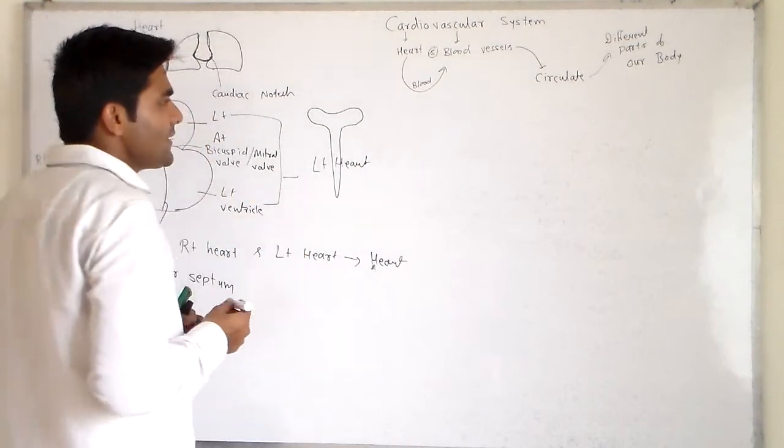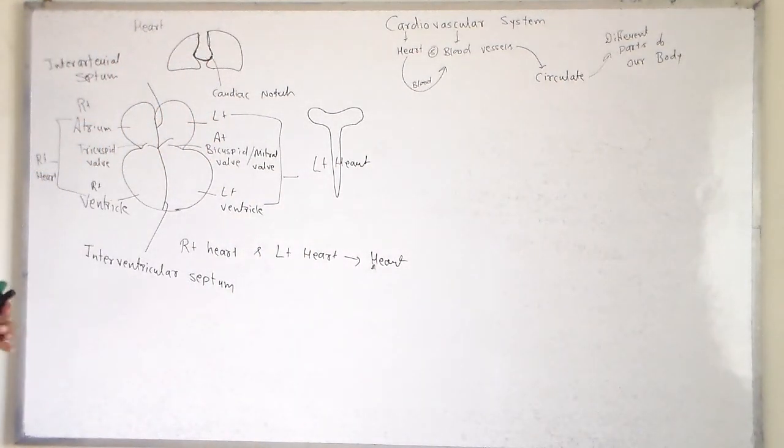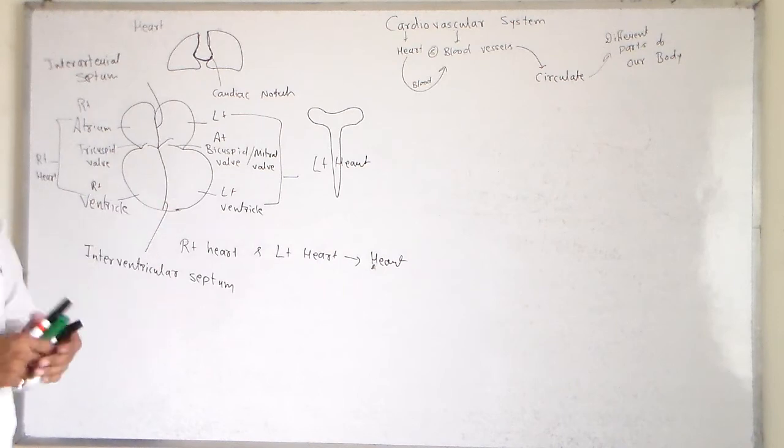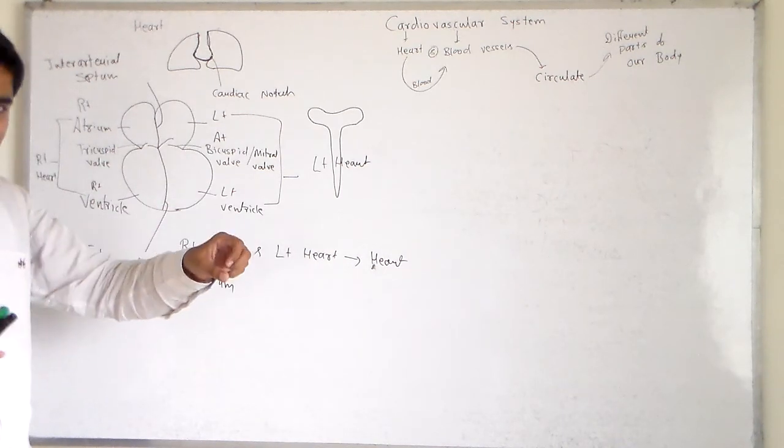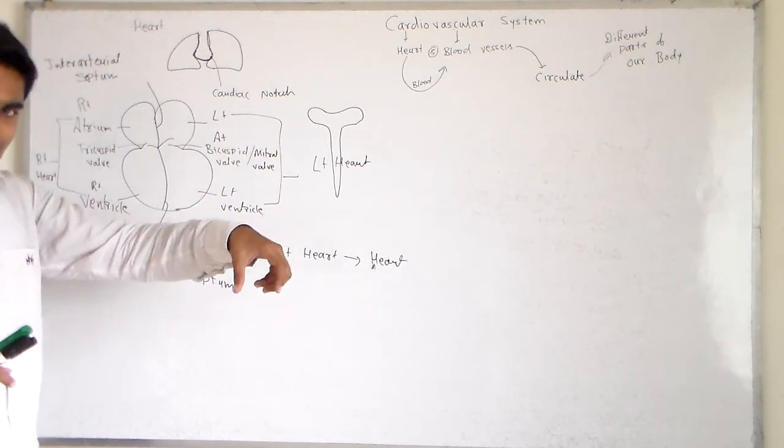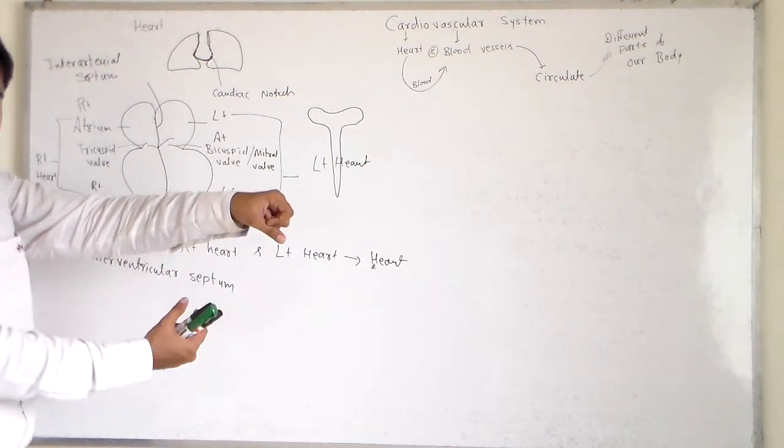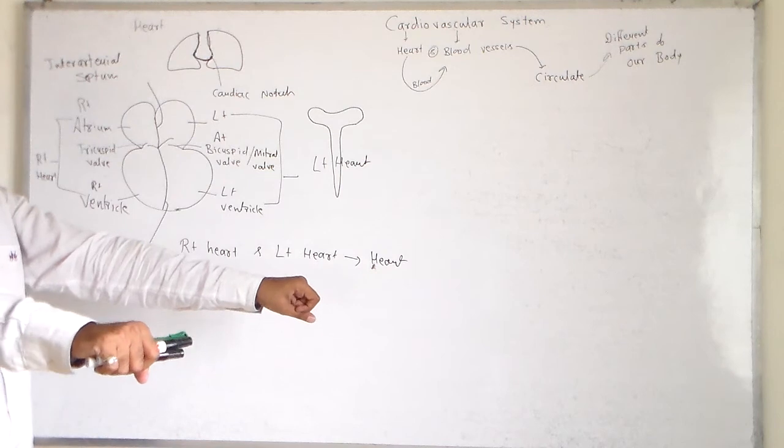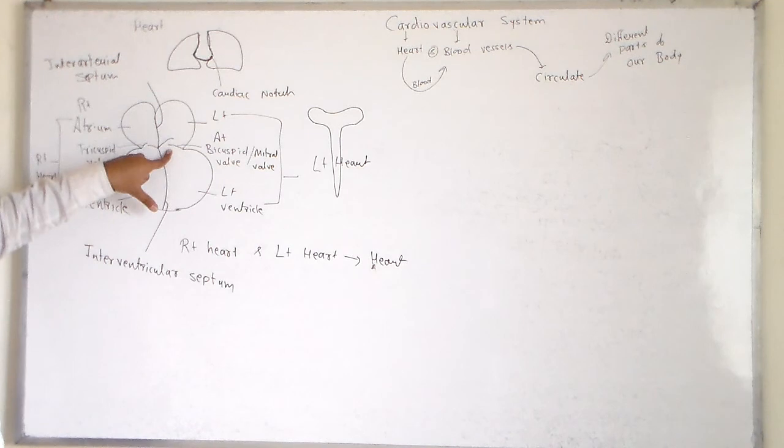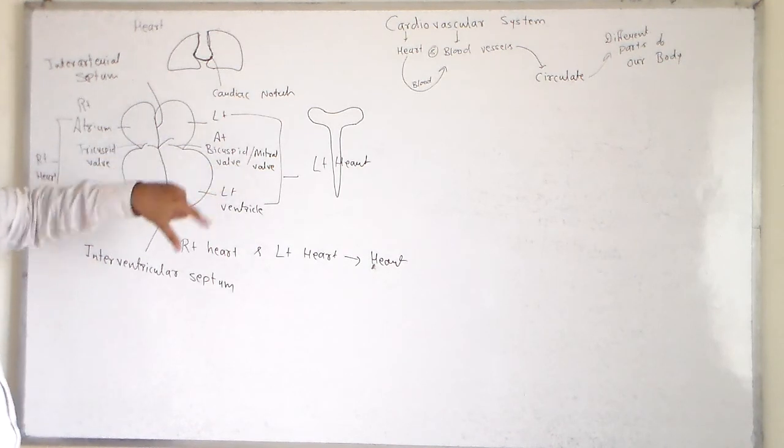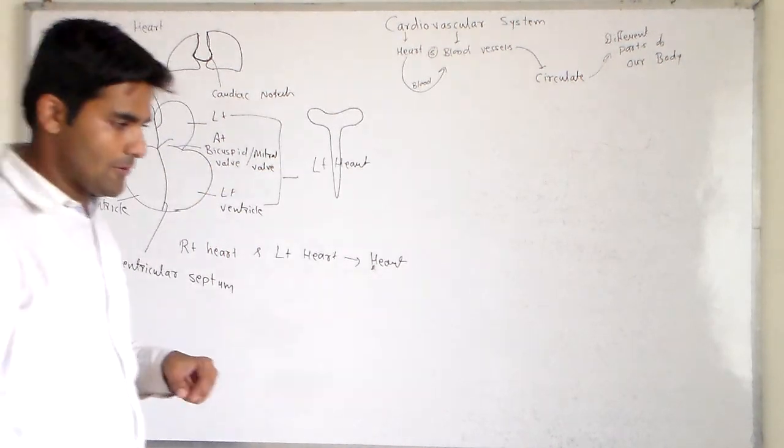In mitral sticks, what do you see in Hindu religion? They put one hand on the leg, and that stick structure resembles the bicuspid valve. That's why it is known as the mitral valve.